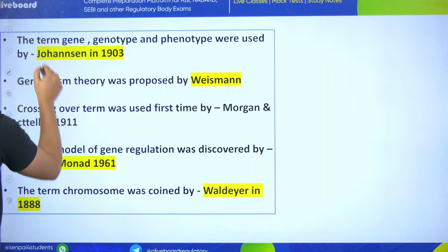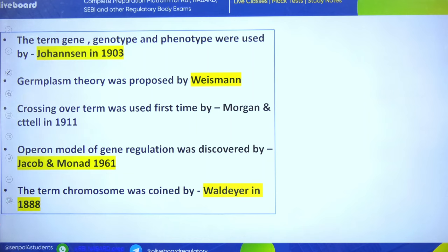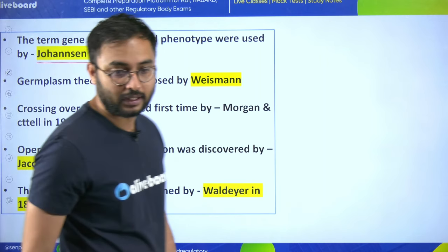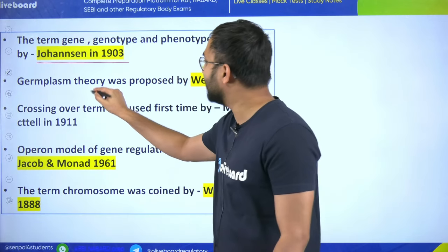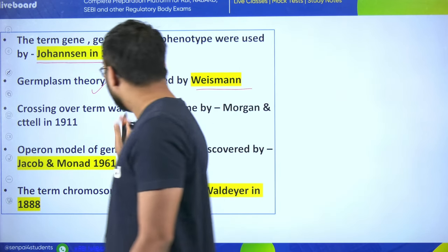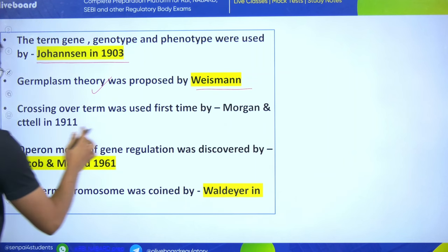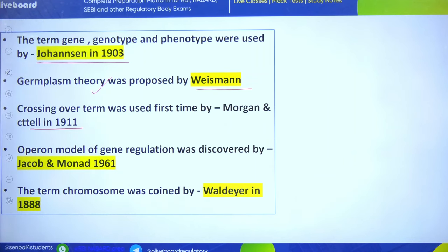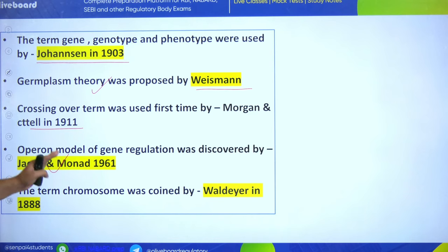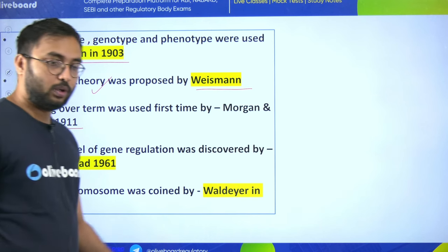The terms gene, genotype, and phenotype were used by Johansson in 1903. The germplasm theory was given by Weismann. The term 'crossover' was used first by Morgan and Sitel in 1911. The operon model of gene regulation was discovered by Jacob and Monad in 1961. The term 'chromosome' was coined by Waldeyer in 1888.